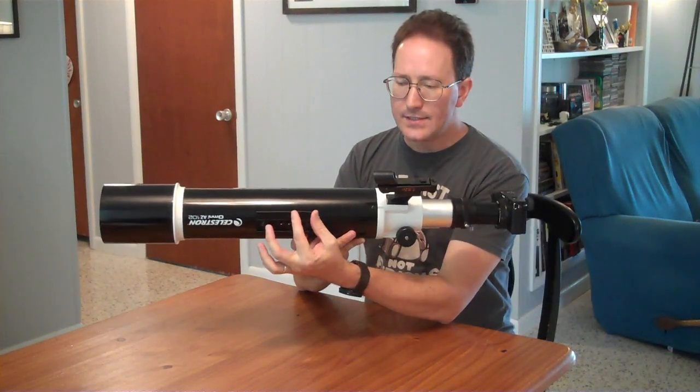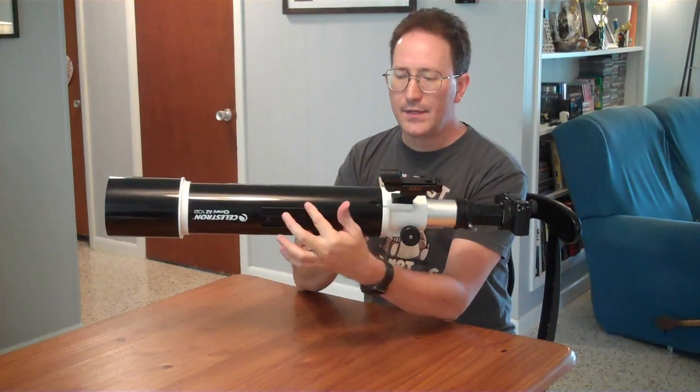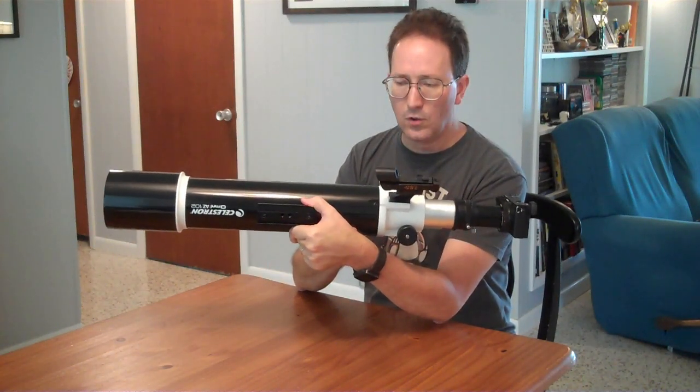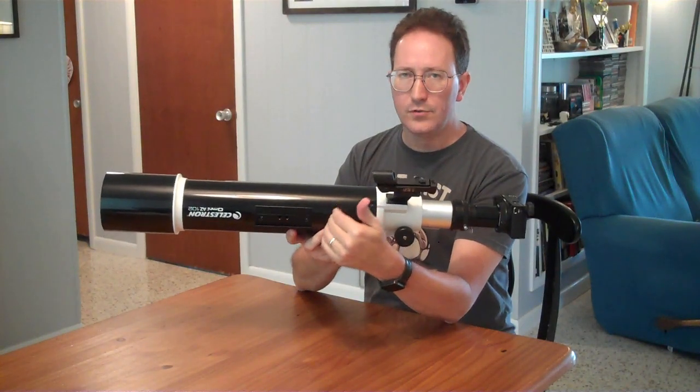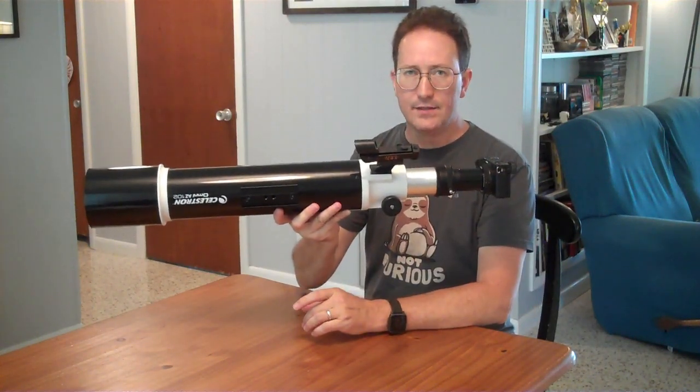Now, the center of gravity or the mounting point used to be right at this end. So by flipping it around, I'll still be able to mount it there when I have an eyepiece on it, and it'll still work. But I'll give myself a little more room so that when the camera's mounted, I'll be able to have this thing nicely balanced in my mount.